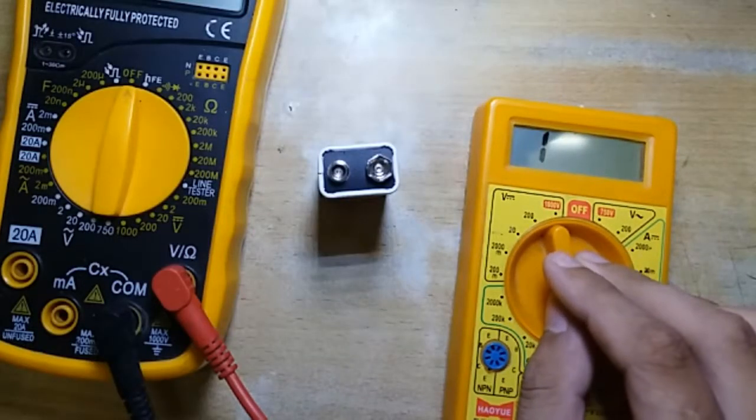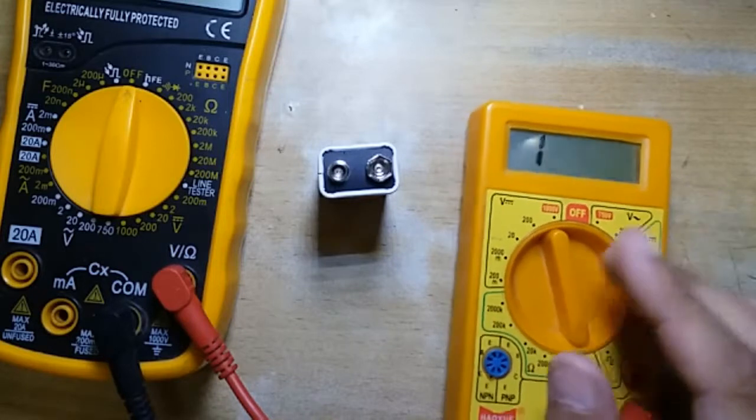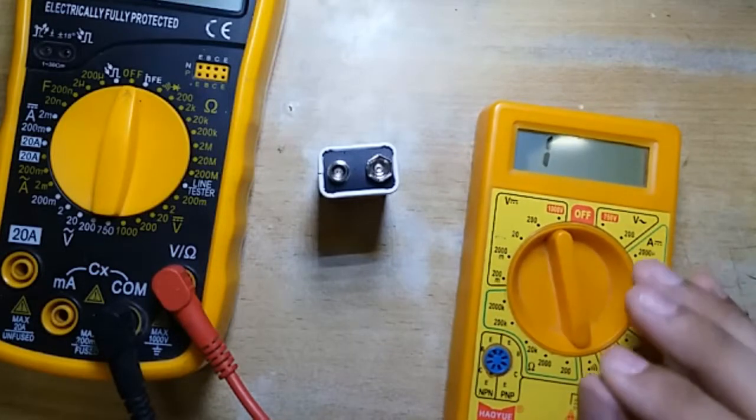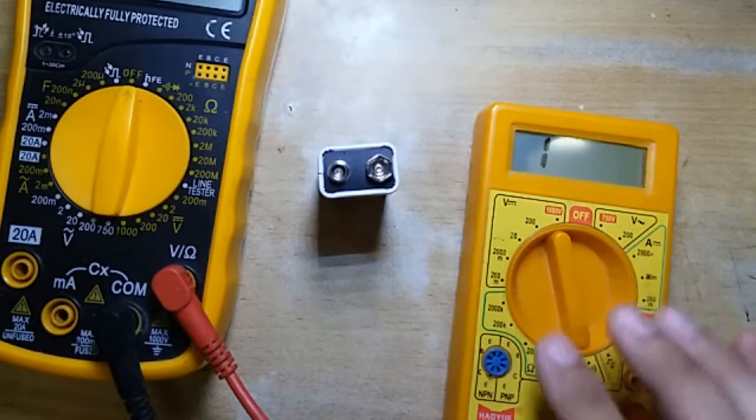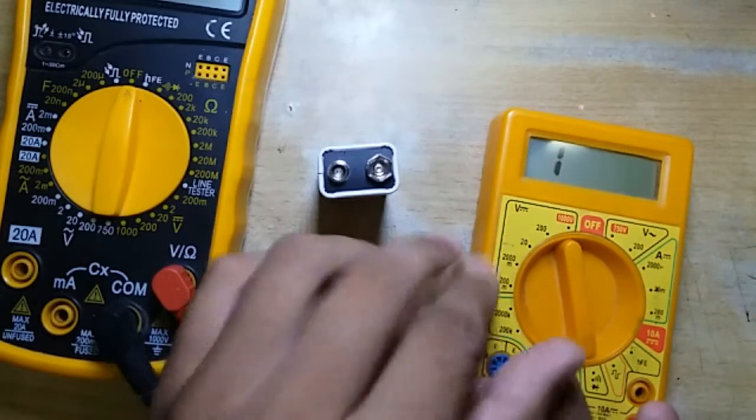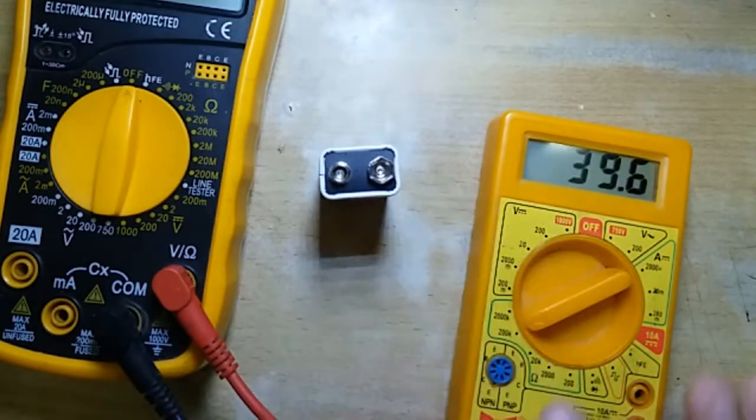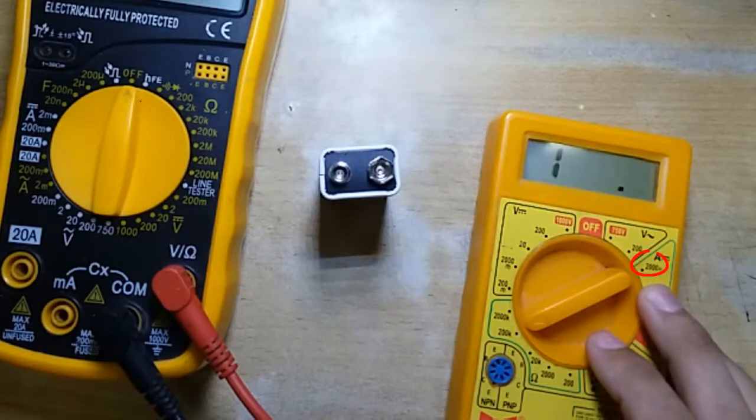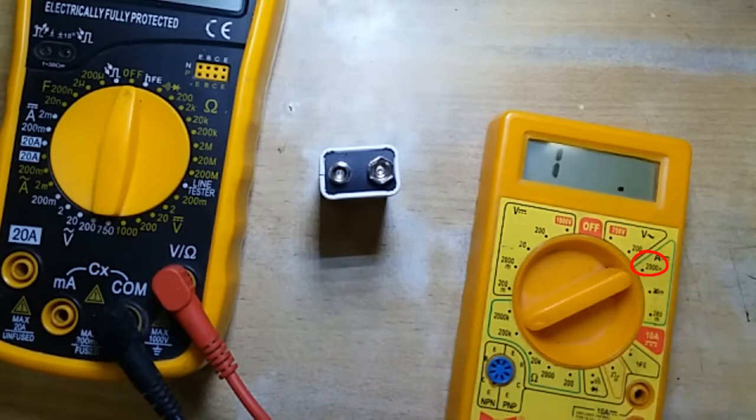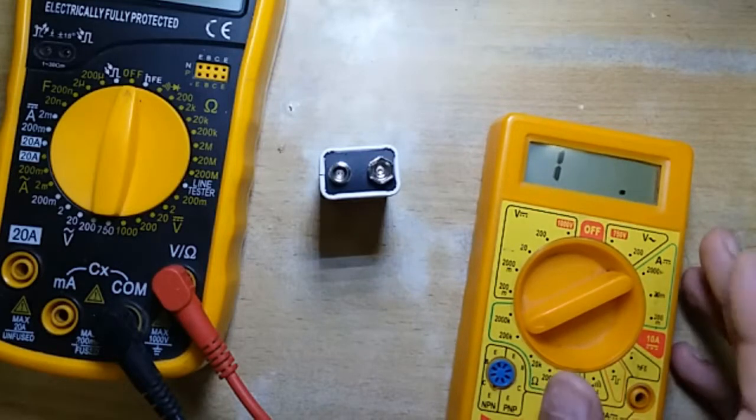Another specification is sensitivity, which simply means what is the least value of the signal, say a current, that a meter can read. In this particular meter here I can read 1 microampere of current under this 2000 microampere setting. So its sensitivity in ammeter range is 1 microampere and the same applies to all other meters too.